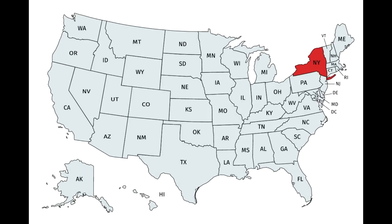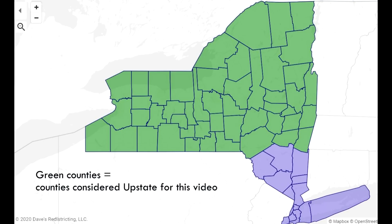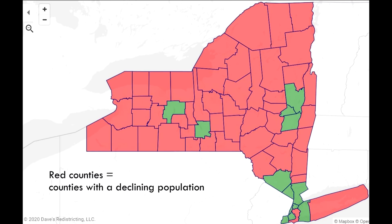The overall state of New York has a population just under 19.5 million, which ranks fourth in the US. Of that population, approximately 13 million live in downstate New York, or the New York City metropolitan area, and just under 6.5 million live in upstate New York. If upstate were its own state, it would be ranked 18th in the country in terms of population, just ahead of Missouri, just behind Indiana. The overall state of New York is losing population, and it is the upstate that is seeing that decline. There are 62 counties in the overall state, 51 of those would be considered upstate.